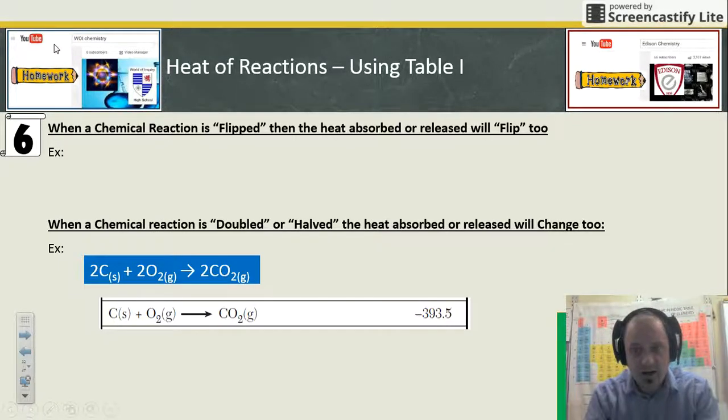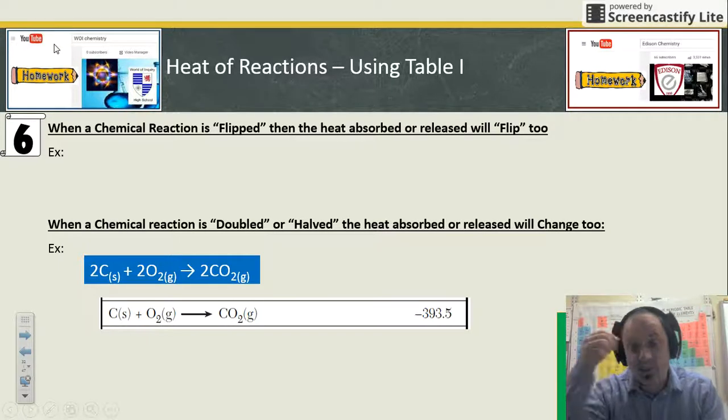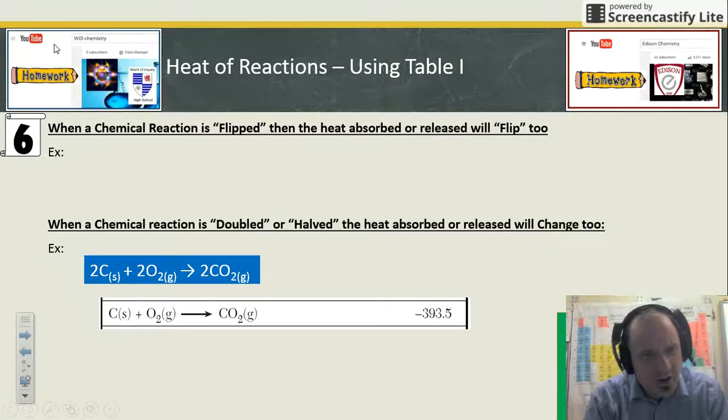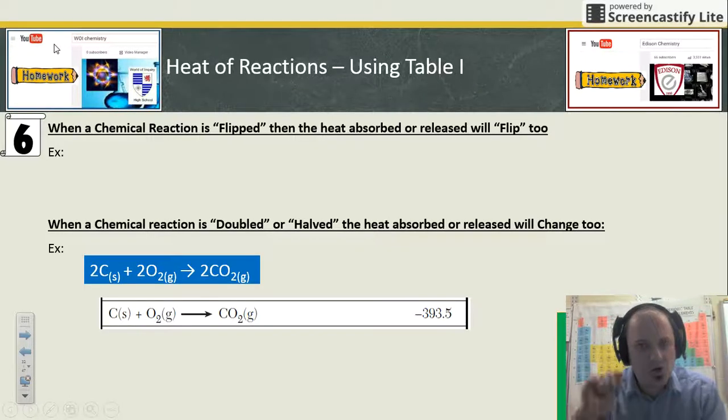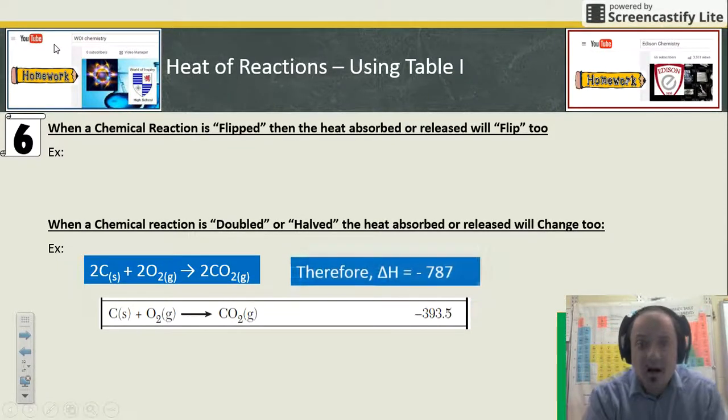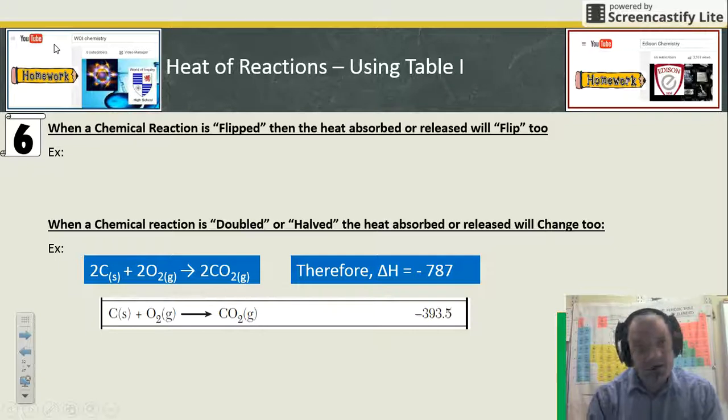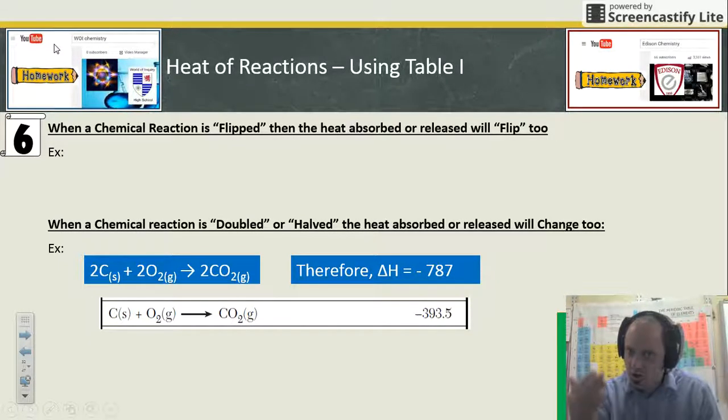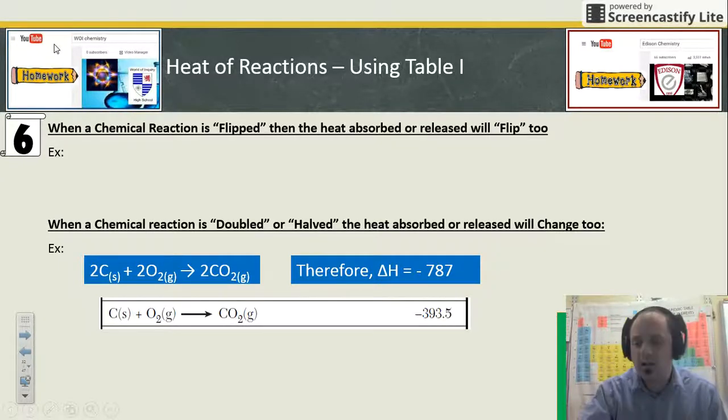The reaction I drew here is two carbons plus two oxygens makes two CO₂s. I've doubled the amount of molecules or elements that are involved, so I must double the amount of heat that is involved too. I didn't flip this reaction so the sign stays the same, but the magnitude got doubled because I doubled the size of the reaction. If you double the amount of stuff you're reacting, you would double the amount of heat that is required or is produced.